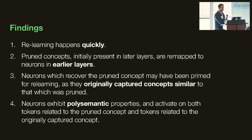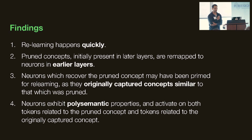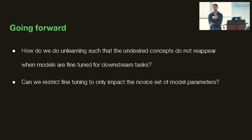What all of these experiments prompt us to think about is: how do we actually unlearn undesired concepts such that when models are adjusted slightly for downstream tasks, we are sure those concepts cannot reappear? Or is there a way for us to restrict this unlearning just to the novel sets of representational parameters?